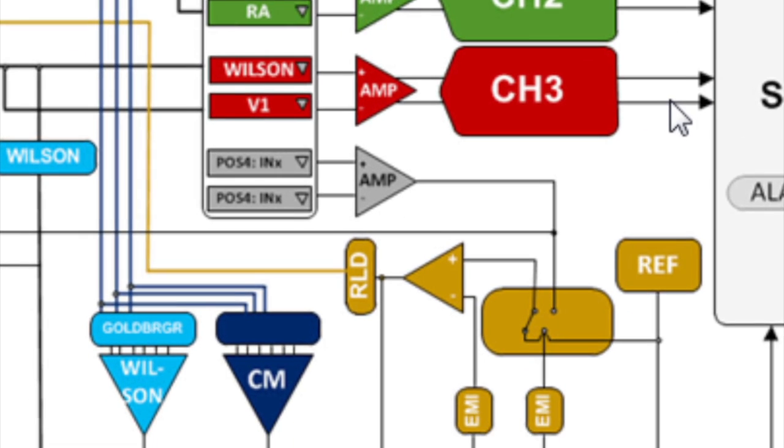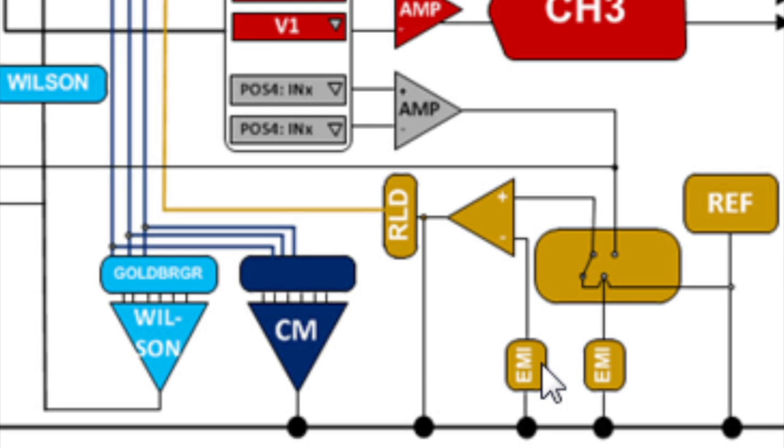To the bottom of the block diagram, we have ECG features such as a right leg driver to create a common mode level for the patient. And to the left we have a common mode block as well as a Goldberger and a Wilson terminal block for the 5-lead and 12-lead ECG applications.